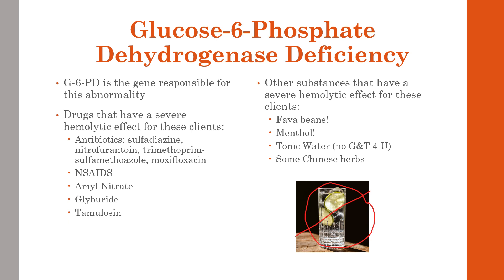G6PD deficiency — G6PD is the gene responsible for this abnormality, and it normally produces an enzyme within the erythrocyte necessary for stabilizing the cell membrane. Some people with this gene deficiency have chronic hemolytic anemia, while others only develop hemolysis when under certain stresses or from certain substances like fava beans, menthol, tonic water, or some Chinese herbs.